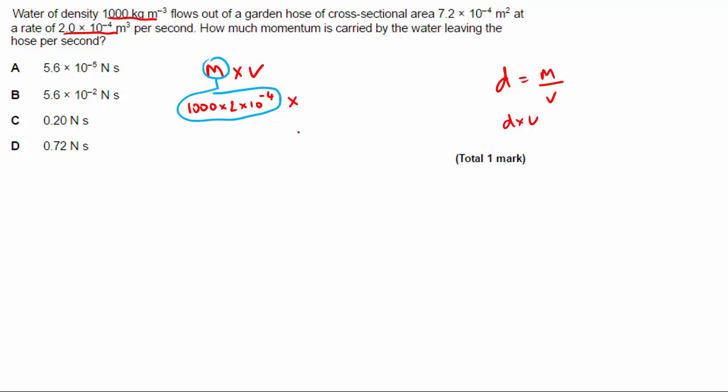And I need to multiply it by the velocity. But I'm not given the velocity. So this is where you kind of have to think about visualizing what's going on. So imagine you have a garden hose, okay? There's the garden hose.